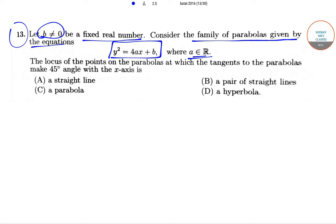The locus of the points on the parabolas at which the tangents to the parabolas make 45° angle with the x-axis is: option A, a straight line; option B, a pair of straight lines; option C, a parabola; or option D, a hyperbola.